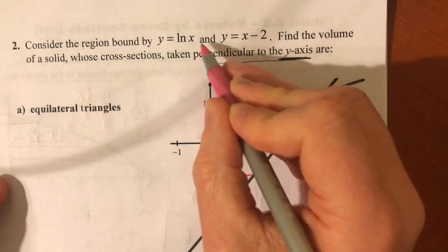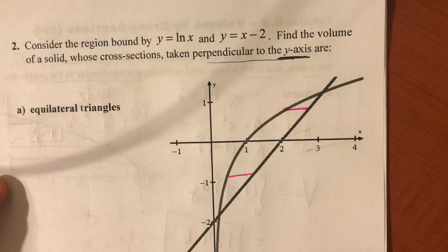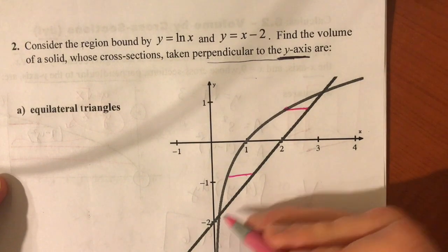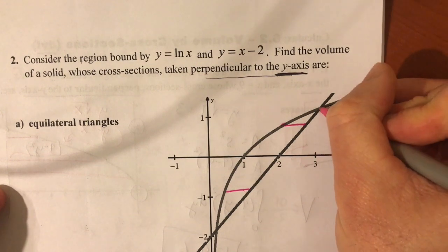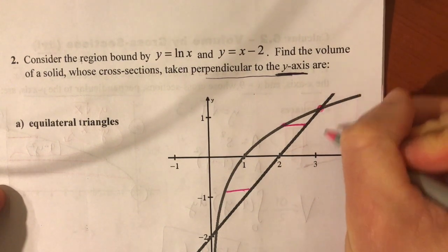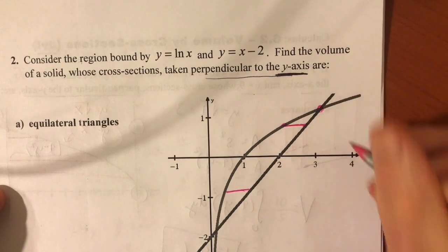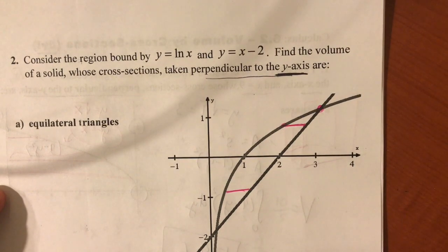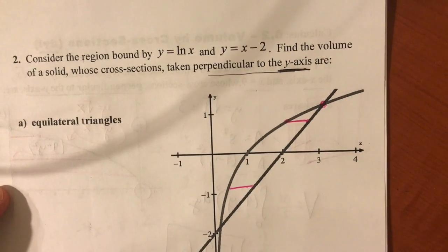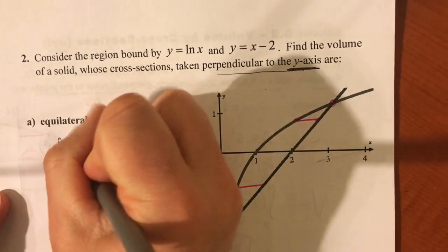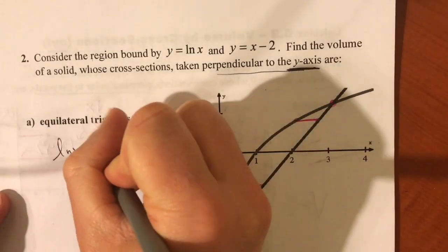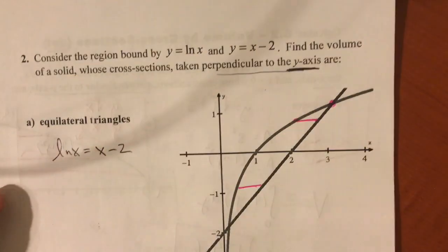So you need to solve these equations for x. And one thing you definitely need is these points of intersection, so this one maybe looks like it's 3 but it could be a little bit more than 3 and I don't really want to assume. So remember if you're going to get your intersections with a calculator, just show the equation ln of x equals x minus 2.